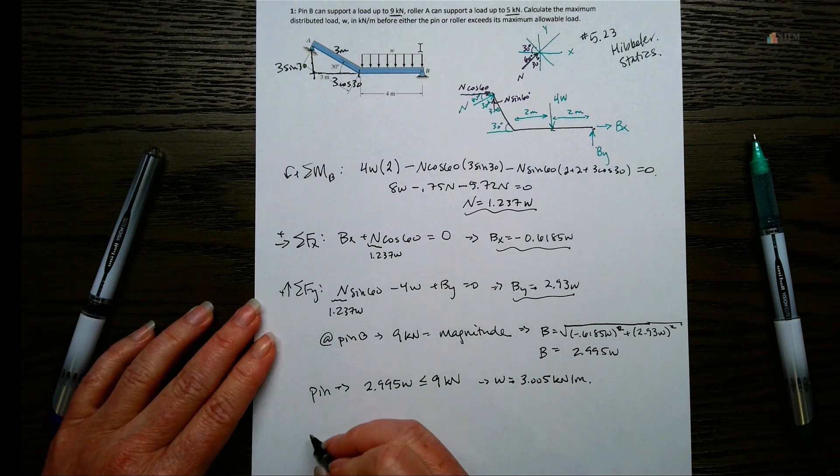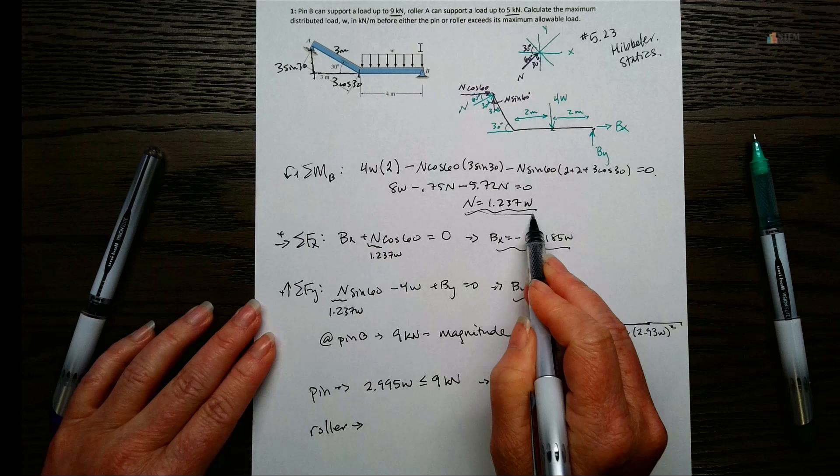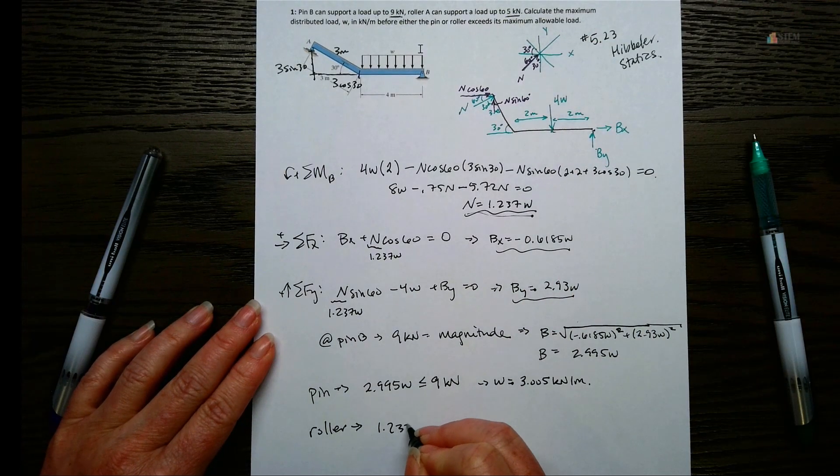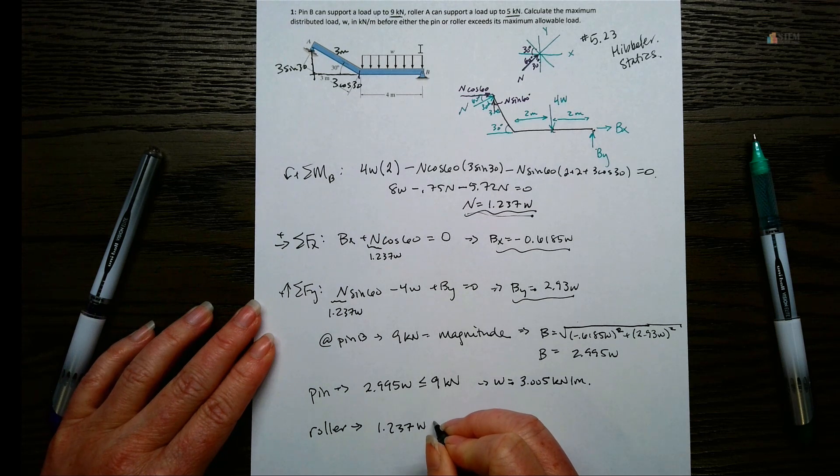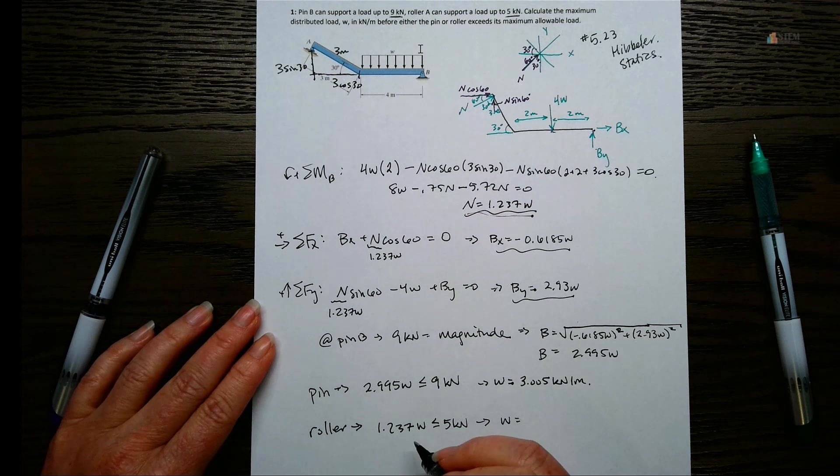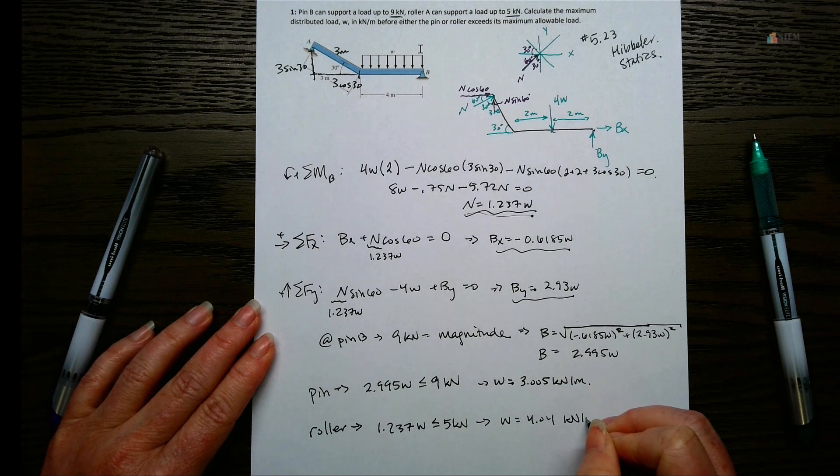Now let's look at the roller. So the roller, we have this force here. And we know we can go up to 5 kilonewtons. So I know 1.237W has to be less than or equal to 5 kilonewtons. And then solve for W here. So if we solve for W here, we get 4.04 kilonewton meters.